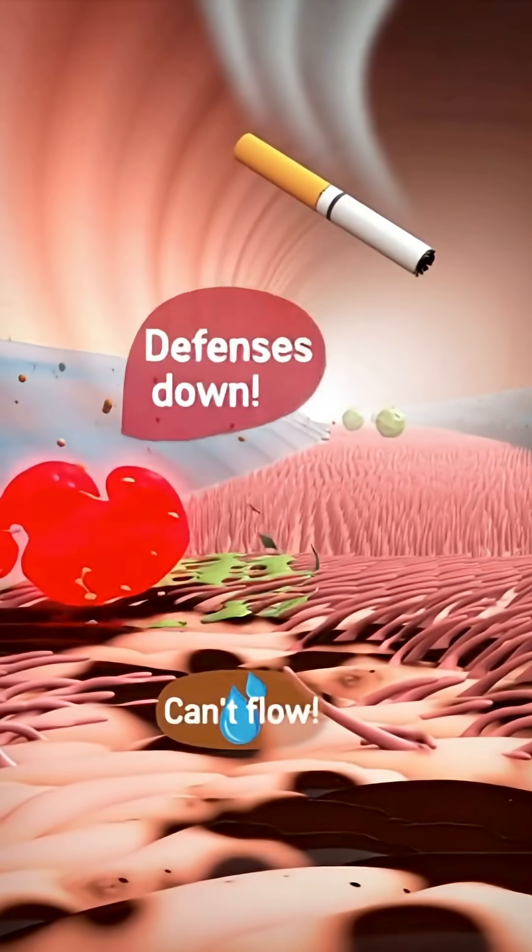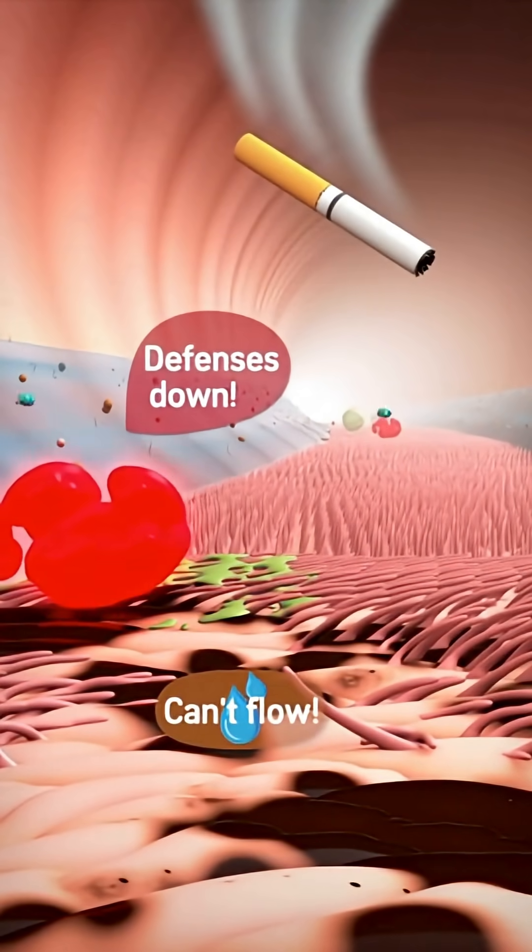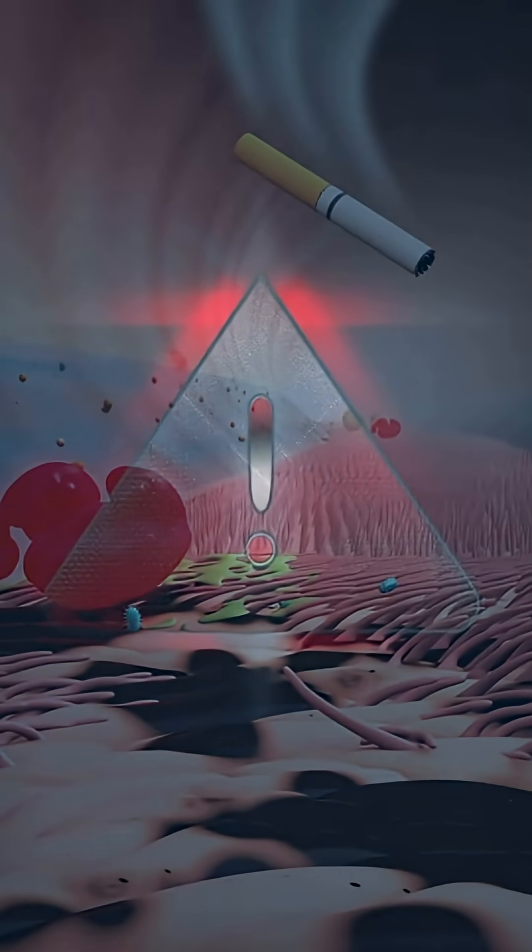Smoking paralyzes cilia for hours while tar coats airways and kills macrophages, completely disabling your lung defense system.